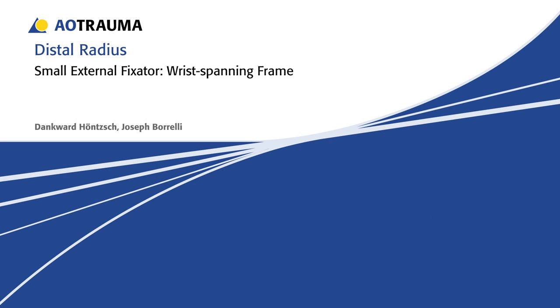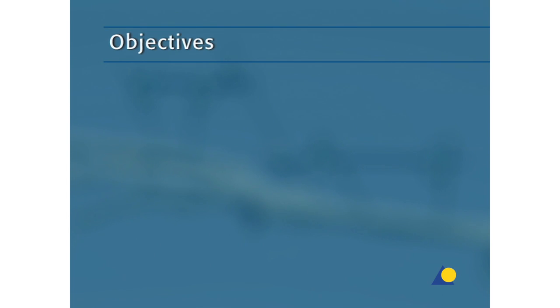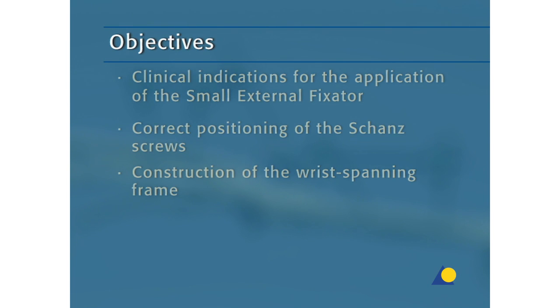In this presentation, the construction of a wrist-spanning frame with the small external fixator will be demonstrated. The objectives of the exercise are to understand the clinical indications for the application of the small external fixator, the correct positioning of the Schanz screws, and the construction of the wrist-spanning frame.